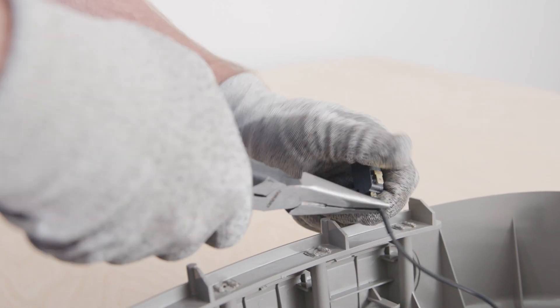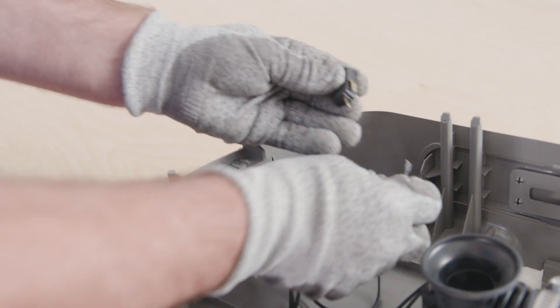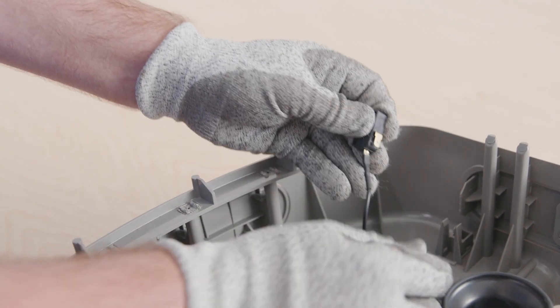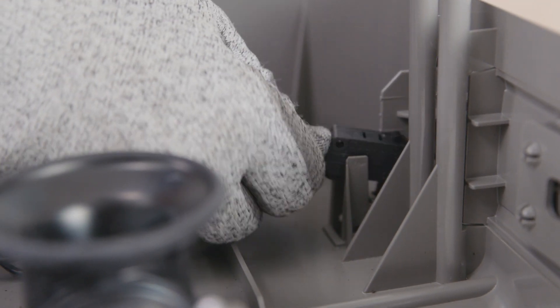Remove the wires from the original micro switch and attach them to the new micro switch. Then install the new switch, following the steps we just described in reverse.